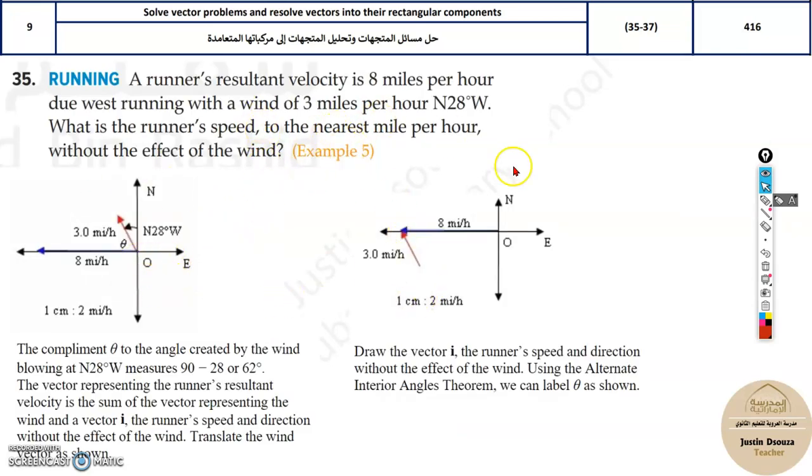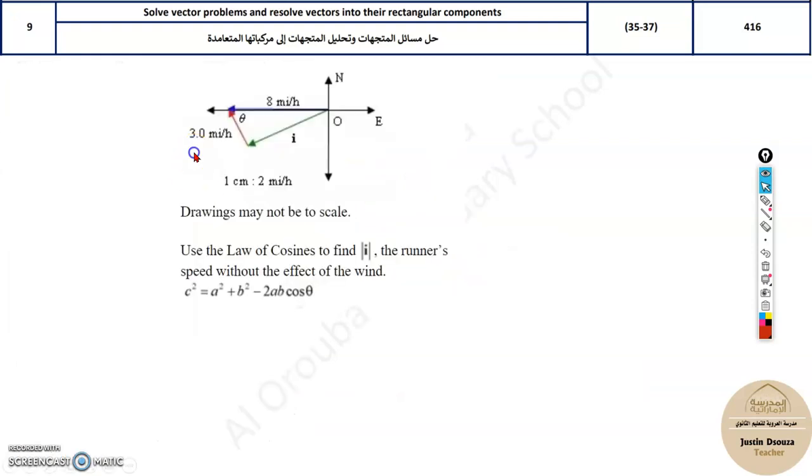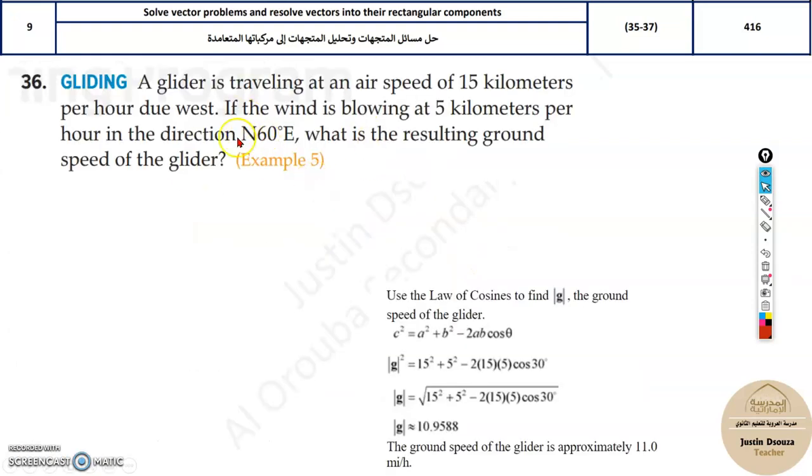You can understand that that particular person was running at a speed of 7.1. Because of the wind, he went in this direction and the wind helped him. The resultant would be more. Basically, because of the wind in that direction.